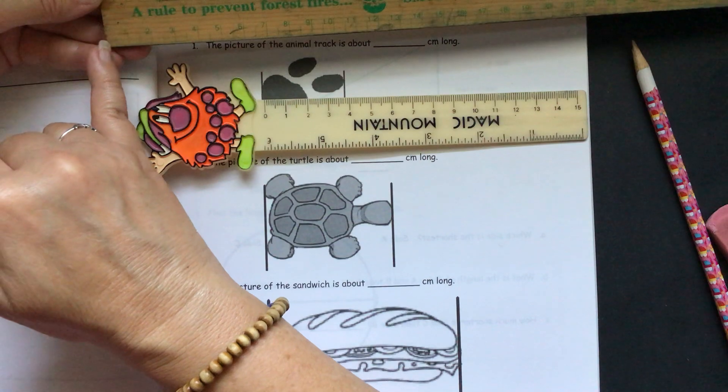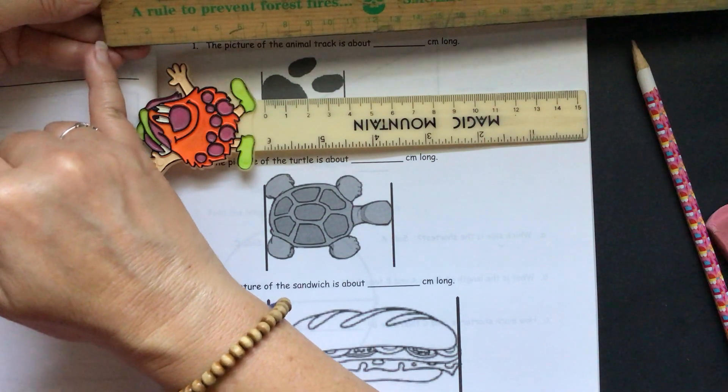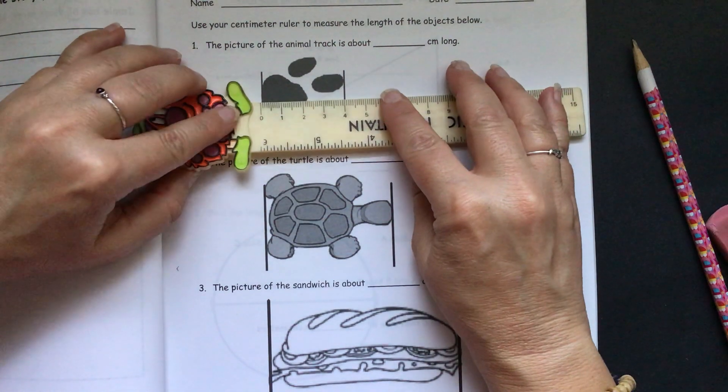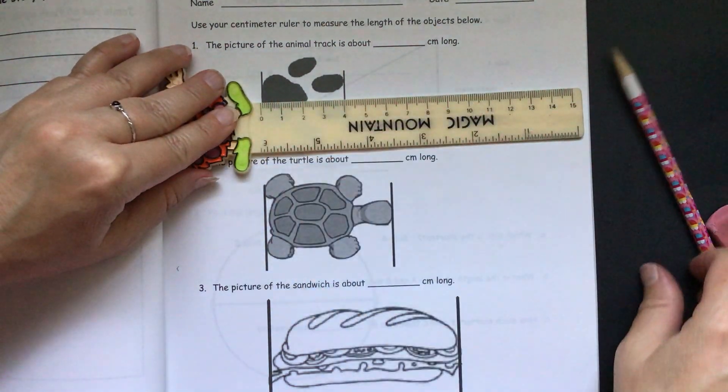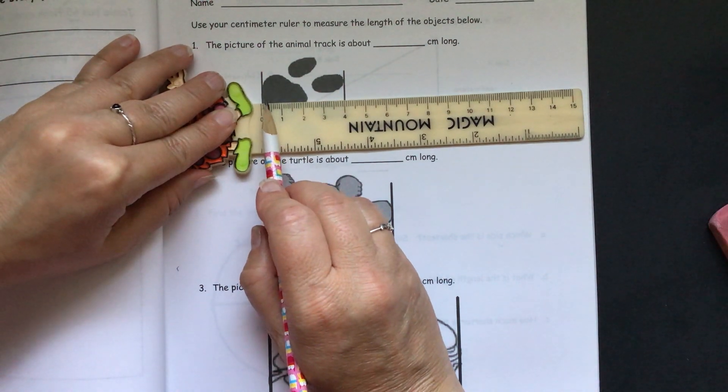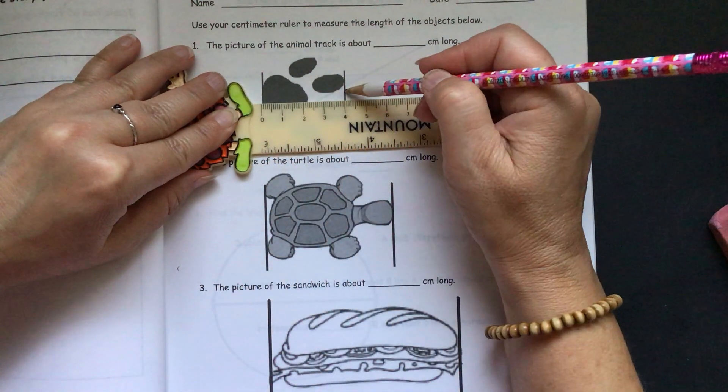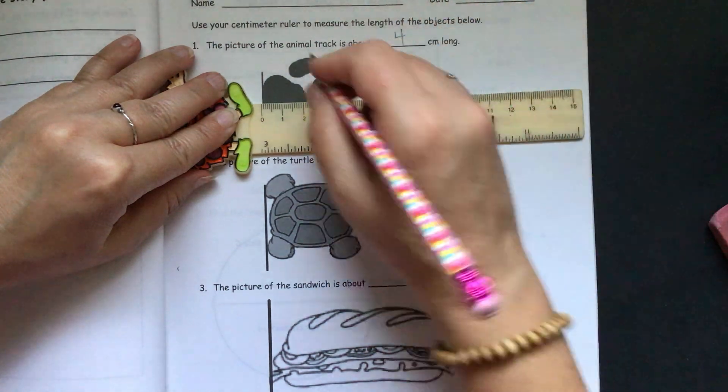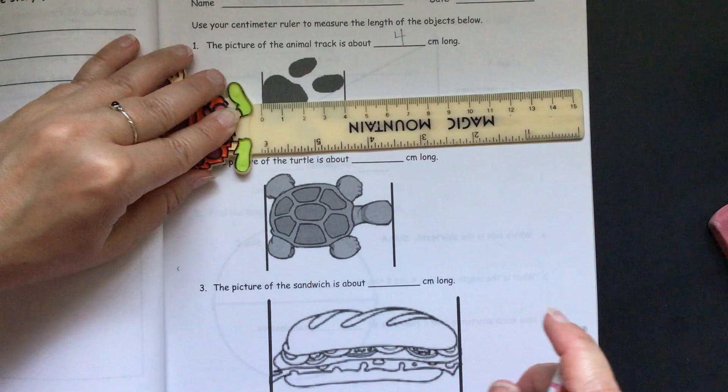You need to be careful to make sure you start wherever that line is on your ruler. I get to start at zero with my ruler here. And I can see, starting at this side, it goes all the way over here. It ends, and I see a four. So, this animal track is four centimeters long.